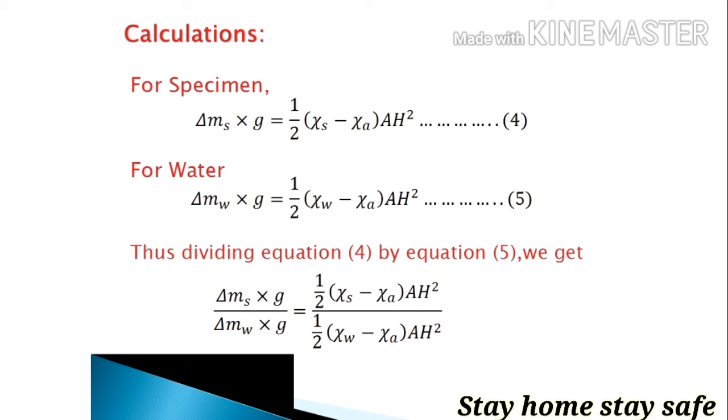Dividing equation number 4 by equation number 5, we get (Δm_s times g) divided by (Δm_W times g) equals [one-half times (χ_s minus χ_A) times AH squared] divided by [one-half times (χ_W minus χ_A) times AH squared].